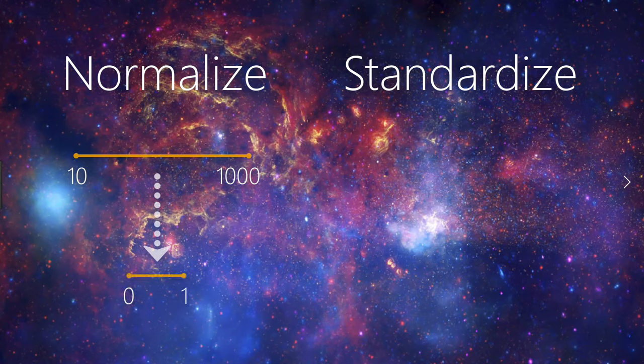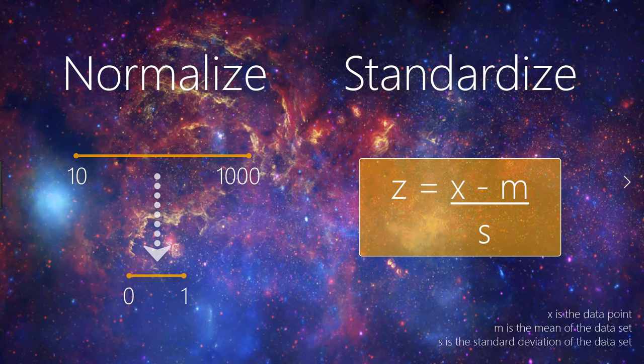And a typical standardization process consists of subtracting the mean of the data set from each data point and then dividing the difference by the data set's standard deviation. This forces the standardized data to take on a mean of 0 and a standard deviation of 1. In practice, this standardization process is often just referred to as normalization as well.